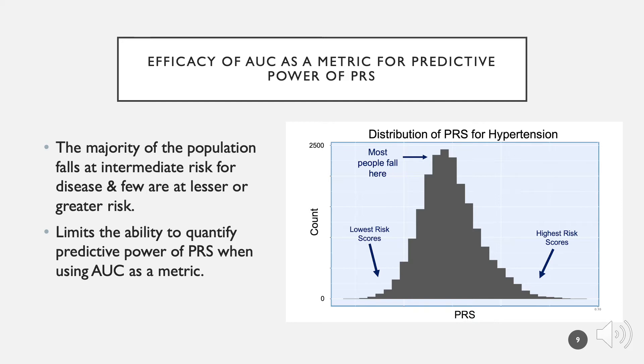Namely, the majority of the population falls at intermediate risk for hypertension, and few are at low or high risk. The individuals in the middle portion all have a relatively equal chance of developing hypertension. Because AUC treats each point in the distribution equally, this limits the ability to quantify the predictive power of PRS. A new metric that emphasizes the predictive power of the tails specifically would be ideal. As a whole, tests that focus on the behavior of the majority of the data fail to demonstrate the effectiveness of PRS, which is why our scores didn't increase the predictive power of our model.